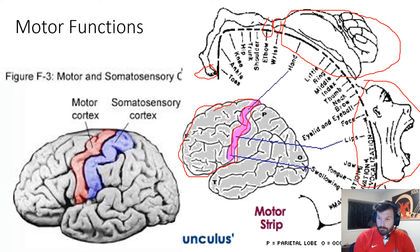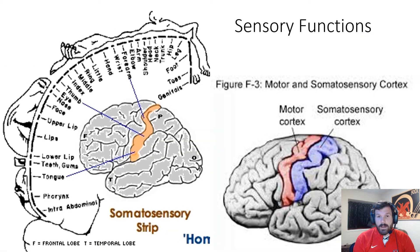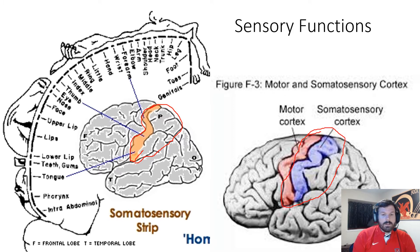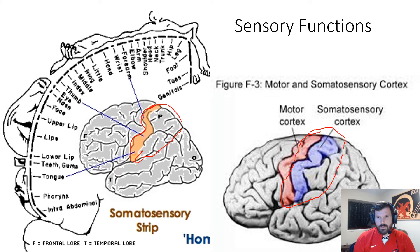Next we have the sensory cortex, or the somatosensory strip. This is in the front part of the parietal lobe, right next to the motor cortex. Its job is to register and process body touch and movement sensations — basically your sense of touch and the feeling of your hands and body moving.